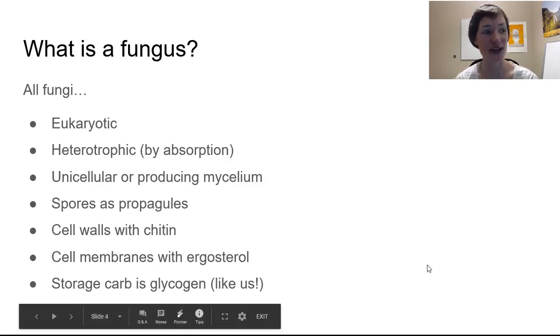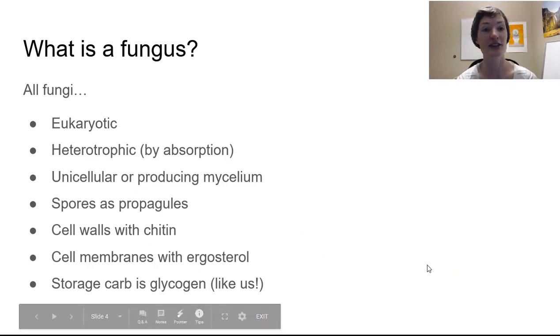So all fungi are eukaryotic. That means that their cells have a nucleus and they have membrane-bound organelles. It's a very complex cell structure capable of doing a lot of different things. Cells have this higher ability to sort of specialize and have a command center that regulates what's going on within that cell.